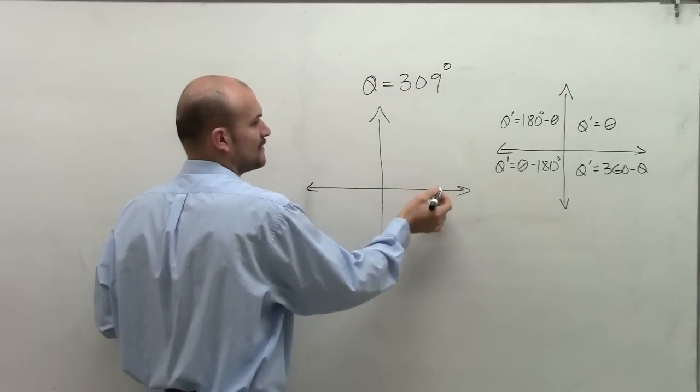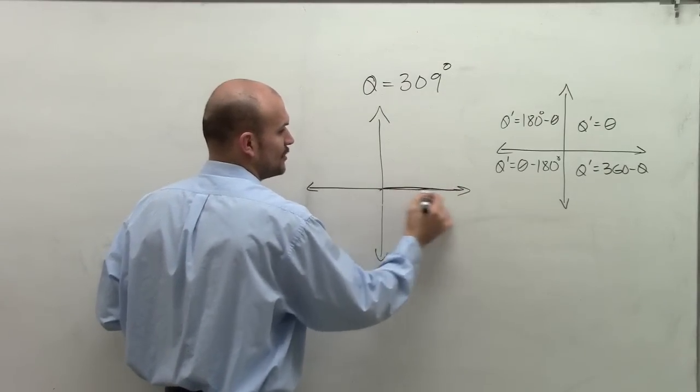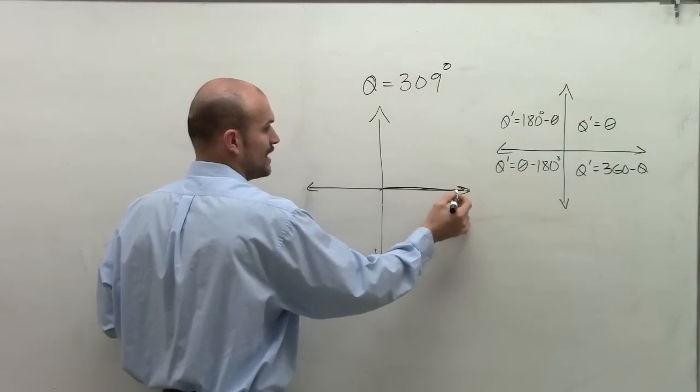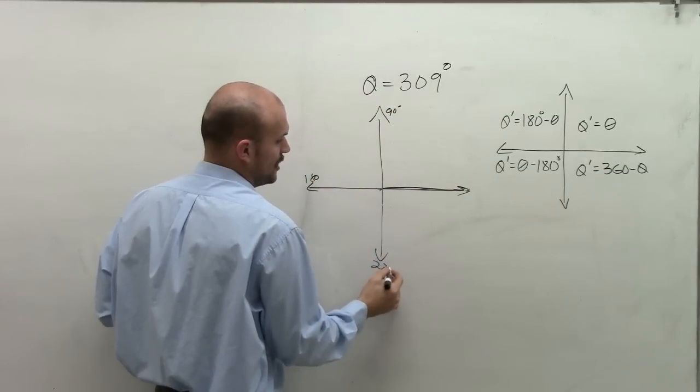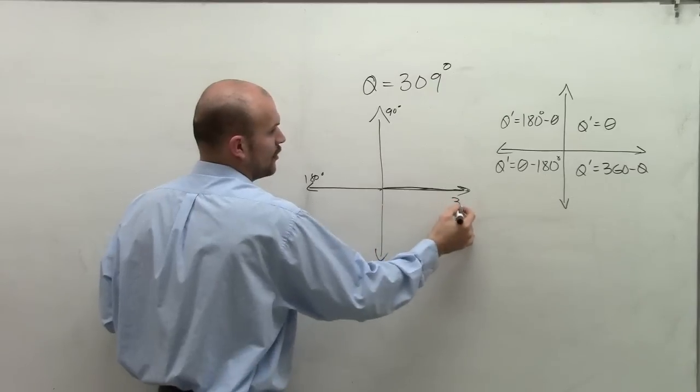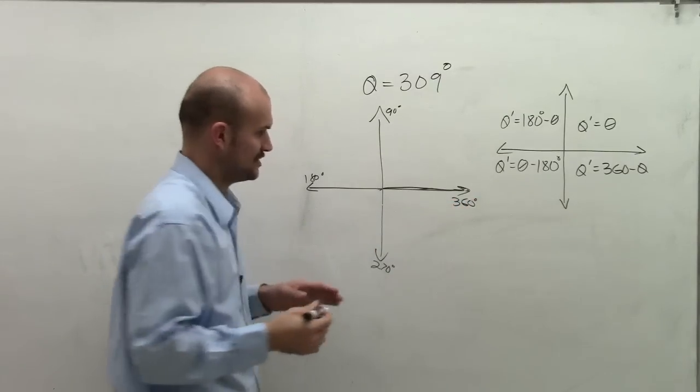Now remember, if I start in standard form, that means my initial angle is going to be here, the initial part of my angle. Up here would be 90 degrees, 180, 270 degrees, and then over here would be all the way around 360 degrees.